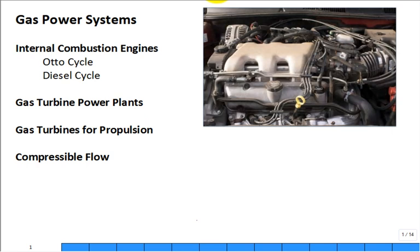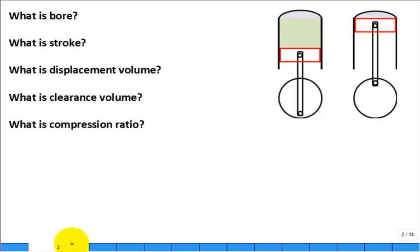We're in chapter 9. We're going to finish up the Otto cycle, move into the diesel cycle. There's something like a dual cycle which is just a combination of Otto and diesel — I'm not really going to cover it, I don't ask any questions on exams about it, but it's in the textbook. So we're doing a focus on the Otto cycle, finishing it up, and then getting into the diesel cycle.